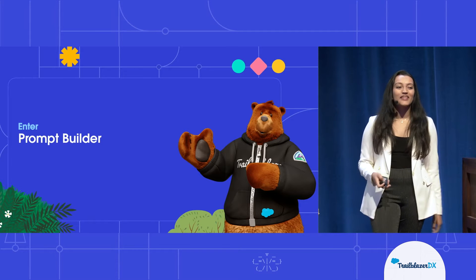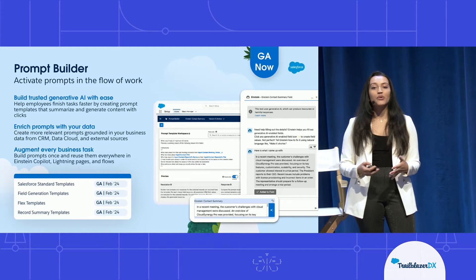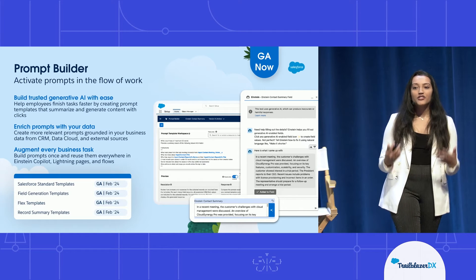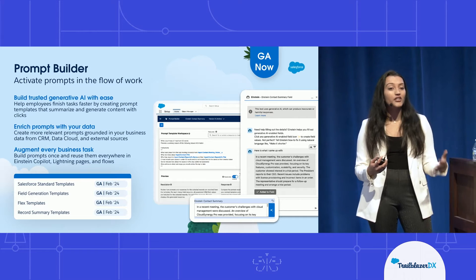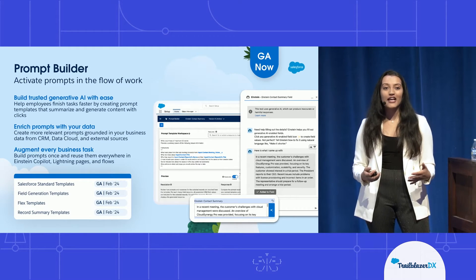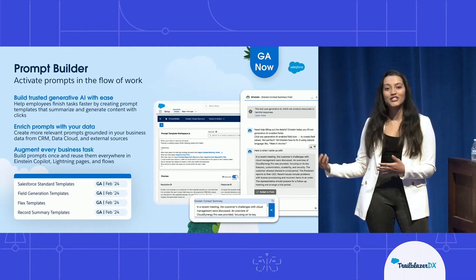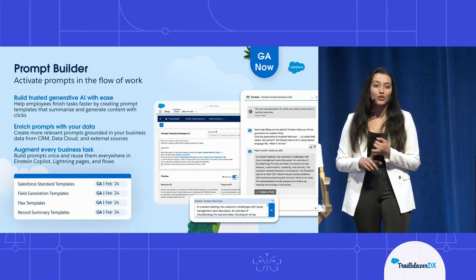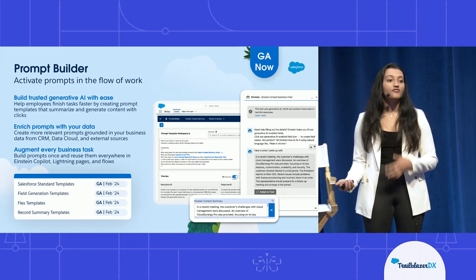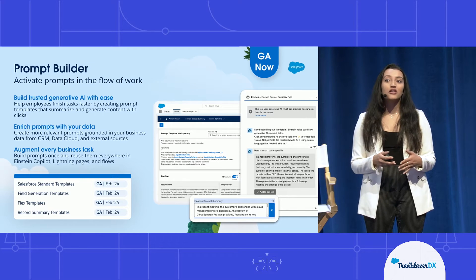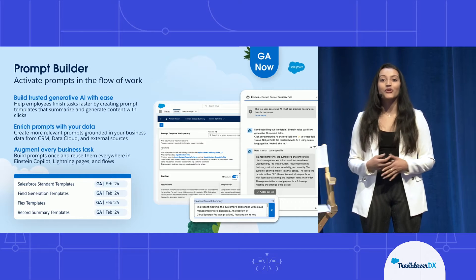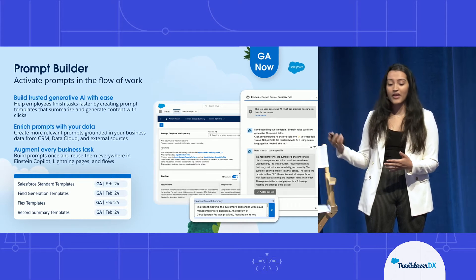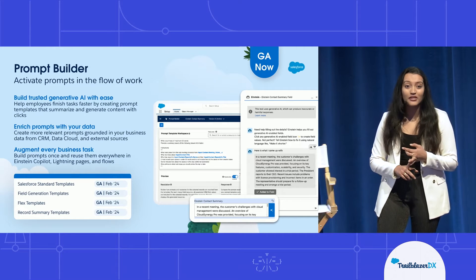That's where we have Prompt Builder — a simple declarative interface for you to create reusable prompt templates and deploy them across your organization. Our number one value is trust, so we make sure you can leverage trusted generative AI with ease. You can reference your data and feel confident it's always handled securely. You can enrich prompts with CRM merge fields, conditional logic through a flow, or external data from MuleSoft or Data Cloud. These prompt templates are highly extensible — invoke them from APIs, flows, invokable actions, and from the Copilot.